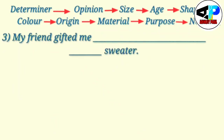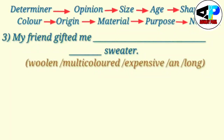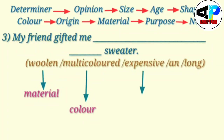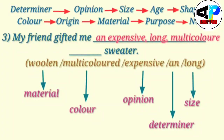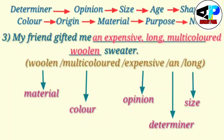Next example: 'My friend gifted me ___ sweater.' The adjectives are woolen, multicolored, expensive, and long. Woolen is material, multicolored is color, expensive is opinion, 'an' is the determiner, and long is size. So as per the order: determiner (an), opinion (expensive), size (long), color (multicolored), material (woolen). The correct sentence is: 'My friend gifted me an expensive long multicolored woolen sweater.'